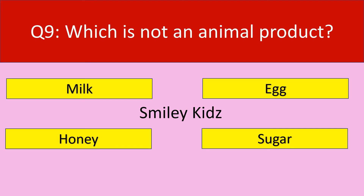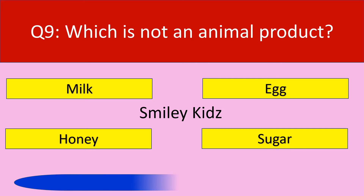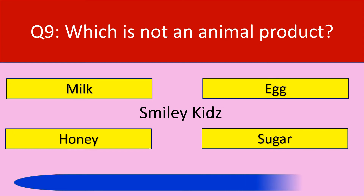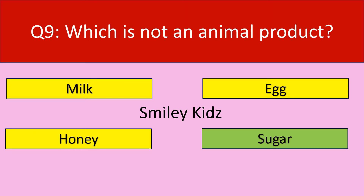Question number 9. Which is not an animal product? Options are milk, egg, honey, and sugar. Your time starts now. The correct answer is sugar. Sugar is not an animal product.